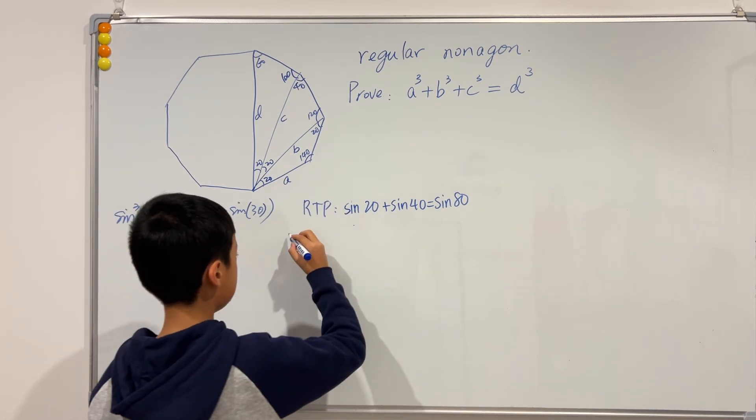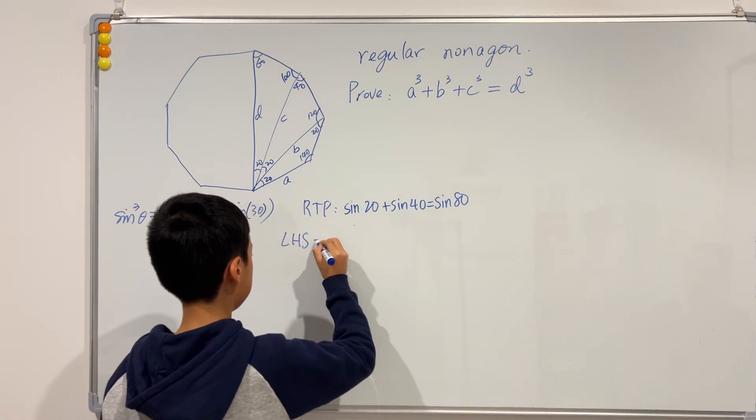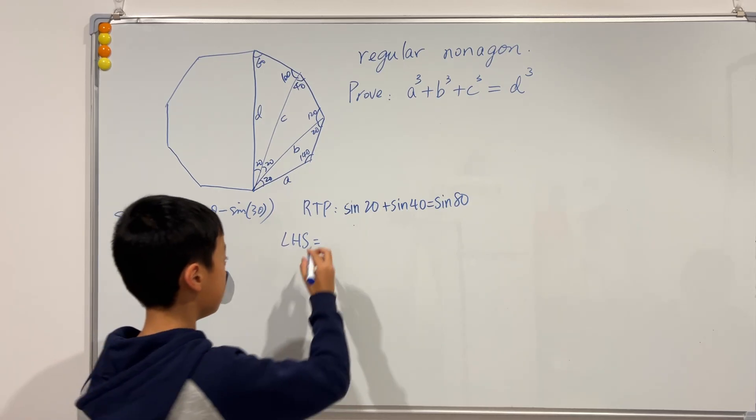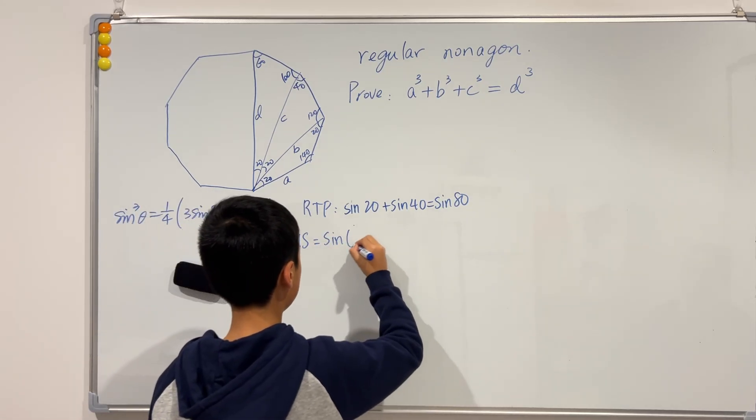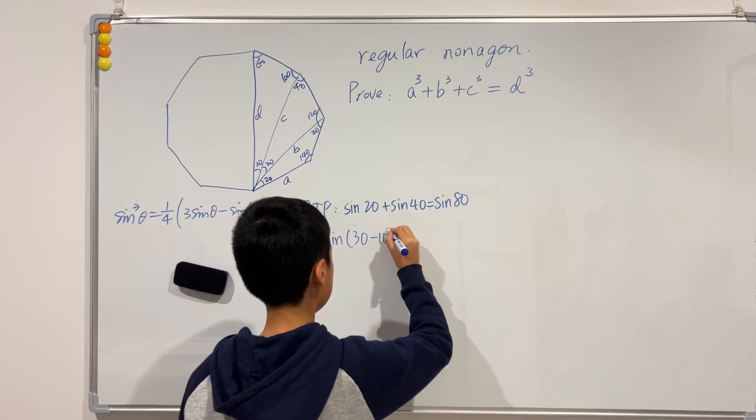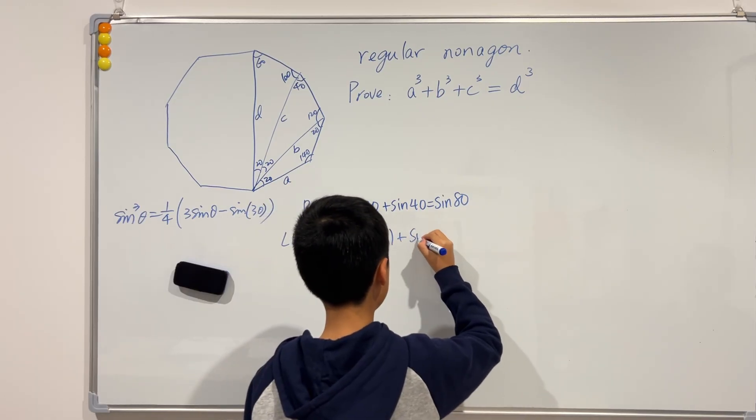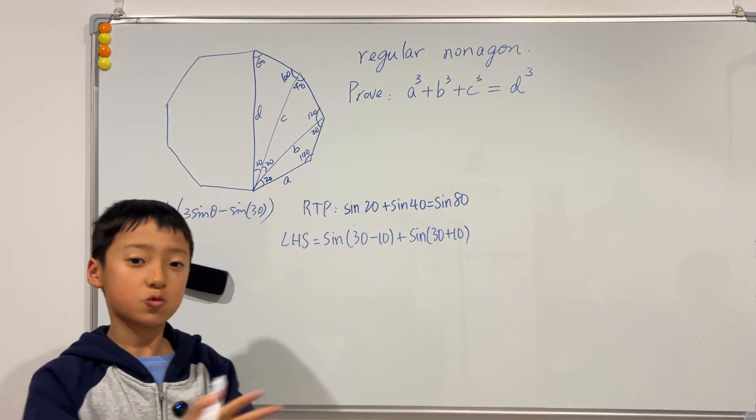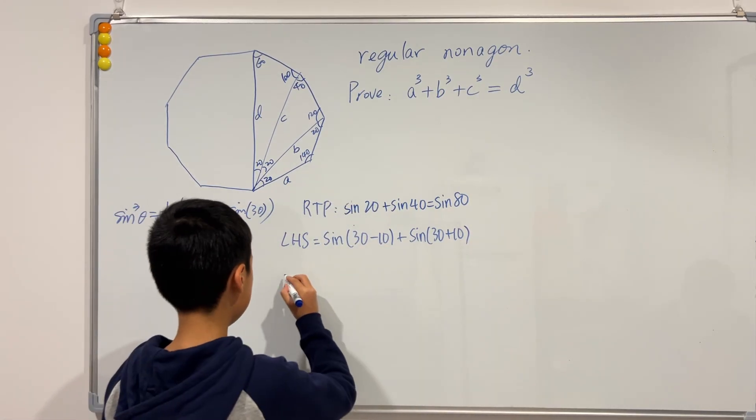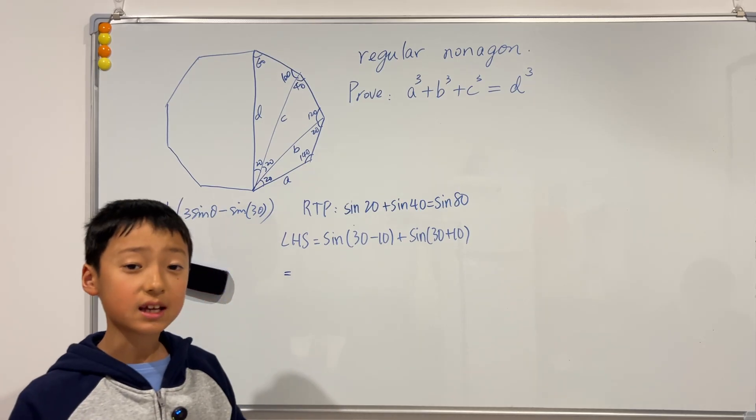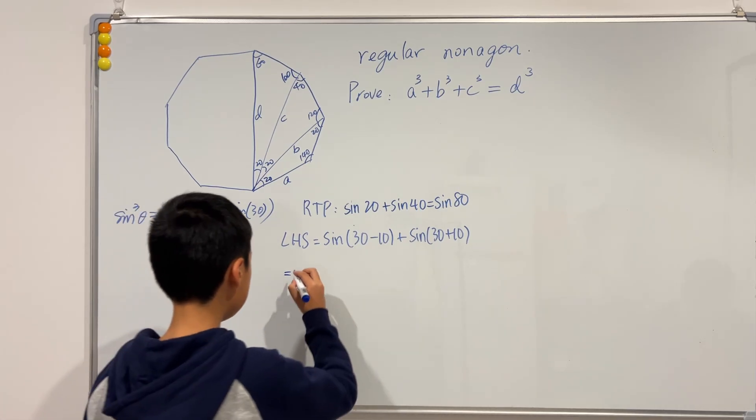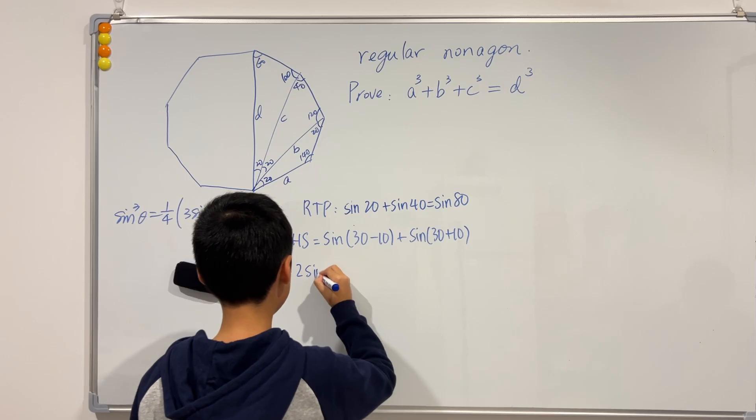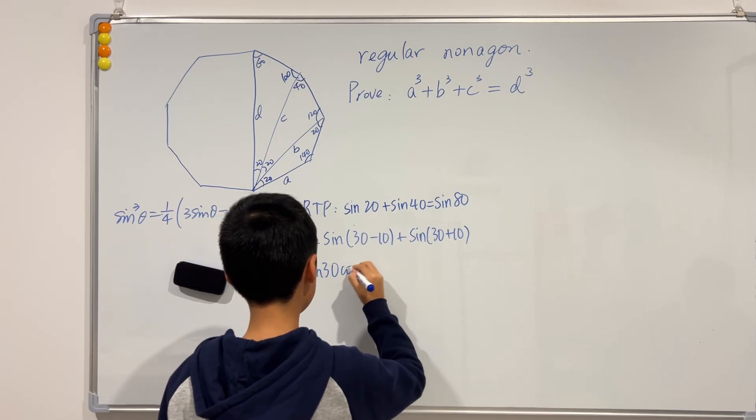So we can see that the left-hand side will just be, we can change this into sine of 30 minus 10, and we add sine of 30 plus 10. We do this because one of the terms will cancel out. So if you do this on your own, you see that the canceling will become into 2 sine of 30 cosine 10.